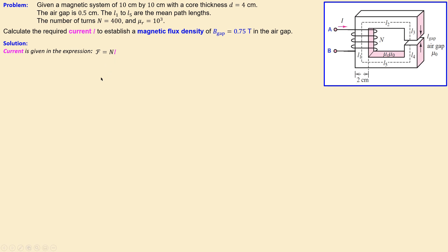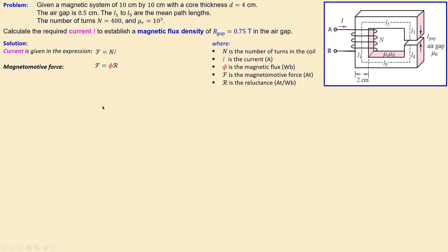We need another formula that also contains the magnetomotive force — one that relates it to the flux and the reluctance. Combining these two equations gives us a new expression. The variables involved are: turns N, current I, flux φ, magnetomotive force F, and reluctance R.